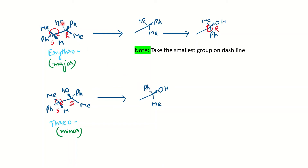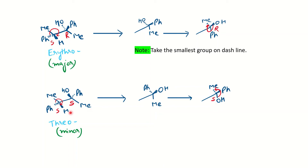In the previous case the wedge was given on the left-hand side, away from the viewer. Here, since it is given on the right-hand side, we convert the wedge to the left-hand side (away from the viewer) with the front group near to you. By keeping the smallest group on the wedge line, we rotate this molecule 120 degrees. Going 1, 2, 3 by priority from OH to Ph to Me, it is anti-clockwise rotation — giving S configuration. So the major product is SR and the minor product is SS.